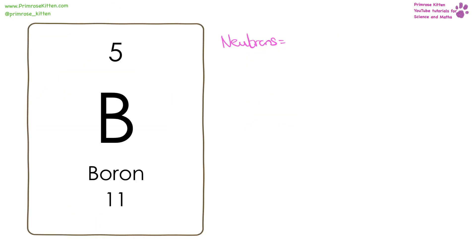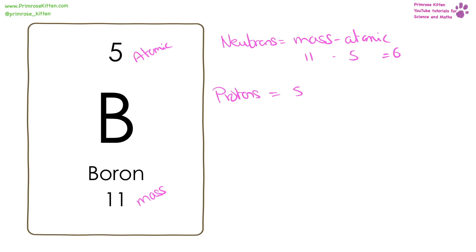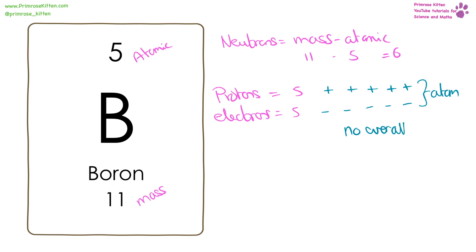Here we have boron — the mass number is 11, the atomic number is 5. To find the number of neutrons, that is mass minus atomic: 11 minus 5 gives us 6. Protons equal 5, electrons equal 5. Protons have a positive charge, and electrons have a negative charge — five of each. So an atom will have the same number of positive charges and negative charges, which means there is going to be no overall charge in an atom.